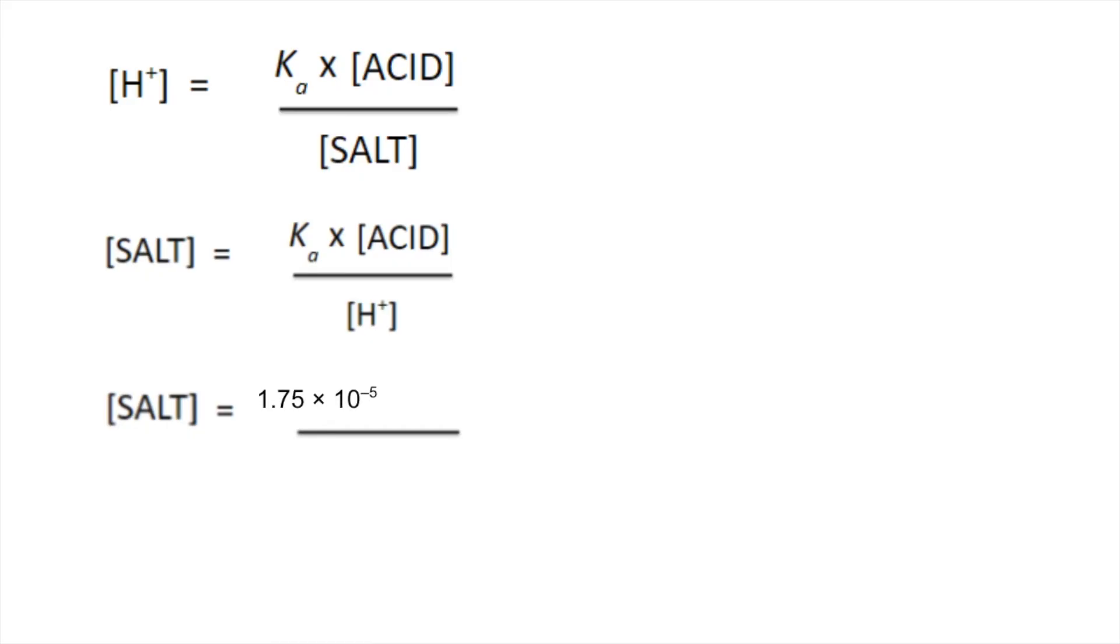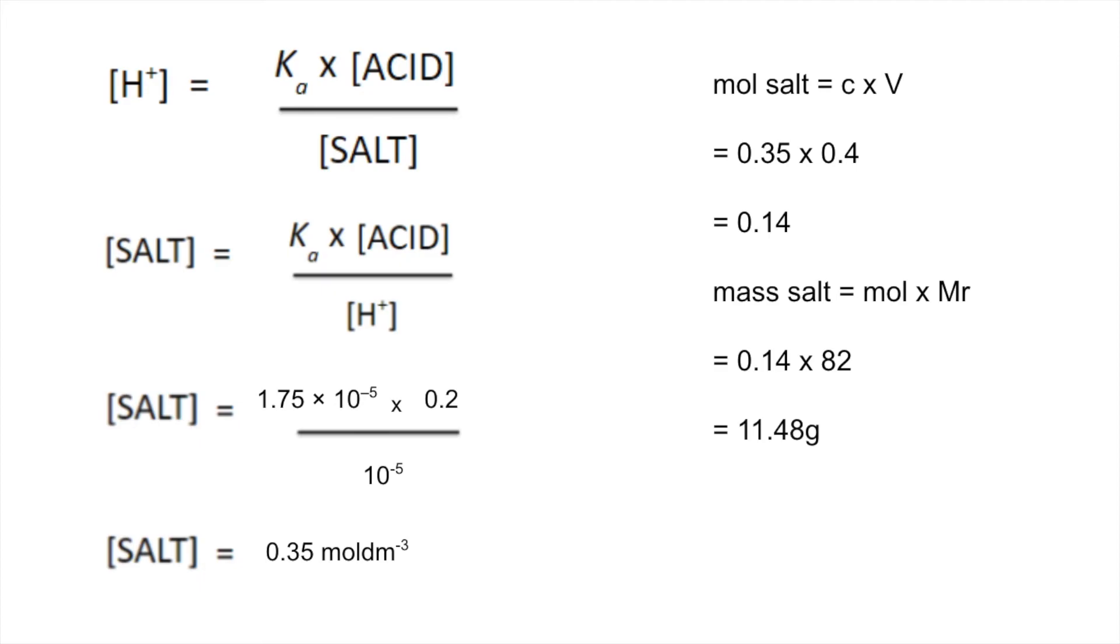The acid dissociation constant, the acid concentration is that, and they haven't given us the H+ concentration directly—they've given us the pH. H+ concentration is 10 to the minus pH, so it's 10⁻⁵. That gives a salt concentration of 0.35 moles per dm³. Turn that into moles: concentration times volume. The volume was 400 cm³, so that's 0.4 of a dm³. That's 0.14 moles multiplied by the MR of 82 for the salt, and we get a mass of 11.48 grams.